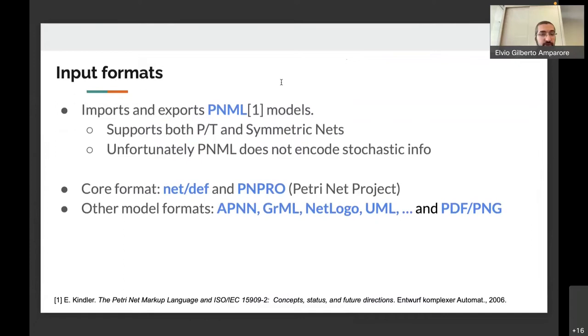Let's move to the main features of GreatSPN. The input formats now support the standard PNML format for models, so it supports both the P/T and high level symmetric nets. Unfortunately, since we are dealing with stochastic models, PNML does not encode stochastic information, so we have to rely on other core formats that support stochastic information.